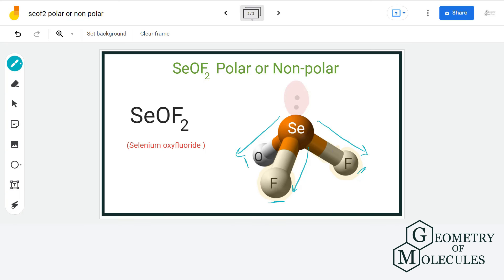there will be uneven charge distribution where the region around fluorine atom and oxygen atom will be partially negative in nature and the region around selenium atom will be partially positive.